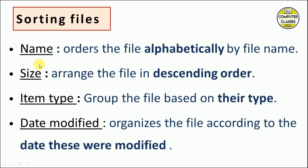We sort files in four ways. First, Name: it orders files alphabetically by file name. Second, Size: it arranges files in descending order. Third, Item Type: it groups files based on their type — for example, all Excel sheets together, all folders together. Fourth, Date Modified: it organizes files according to the date they were modified.